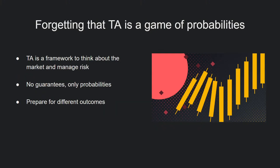The sixth mistake is forgetting that TA is a game of probabilities. Technical analysis isn't an exact science — it's a framework to think about market structure and manage risk. The ideas behind TA are not based on physical laws, so there are never guarantees, only probabilities. The market isn't guaranteed to behave the way you expect, and you should prepare for all scenarios. If you become too confident, there's a risk you oversize, don't manage risk properly, and blow up your account by betting big on what you think is a certain outcome. Always keep in mind: TA is a game of probabilities, never certainties.